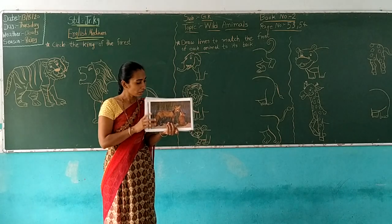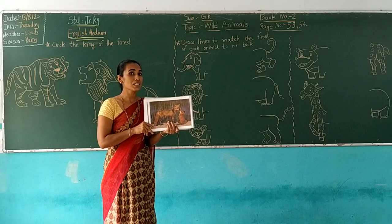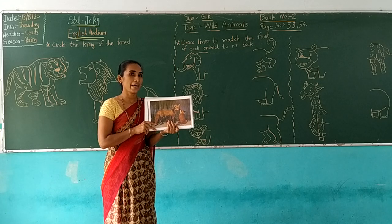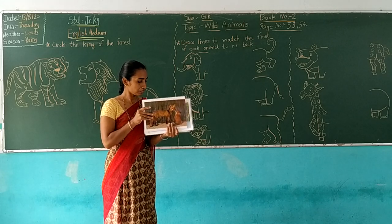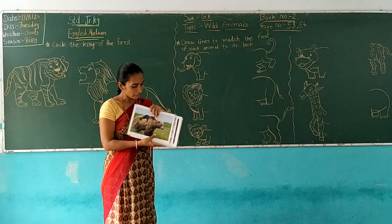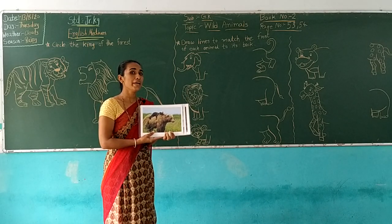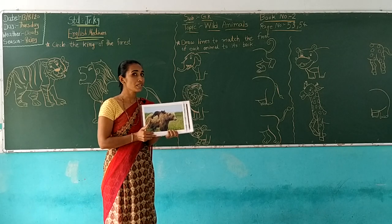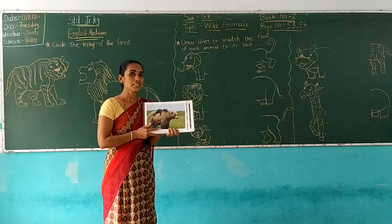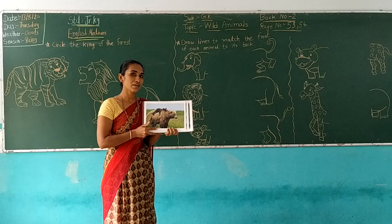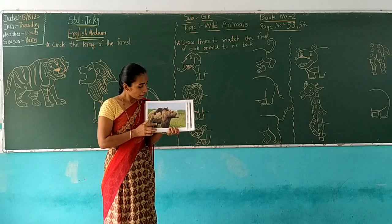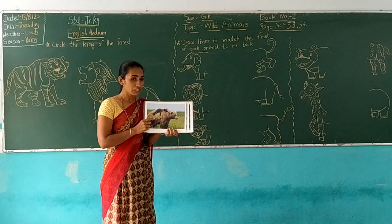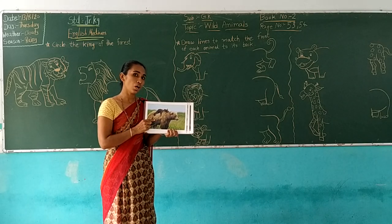And which animal is this? This is a fox. F for fox. And which animal is this? This is a bear. B for bear. On its body there is thick and long hair.